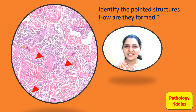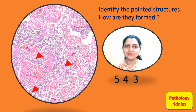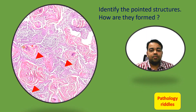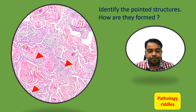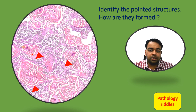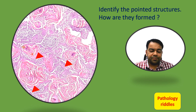The second question is: identify the pointed structures and also tell how those pointed structures are formed. The pointed structures here are called keratin pearls. These are diagnostic of well-differentiated squamous cell carcinomas. Now, how are these keratin pearls formed? The keratin pearl is formed by a tumor cell which starts dividing in all directions. Usually a normal cell will have some kind of polarity, so it will divide in a particular direction. But tumor cells lose all this polarity, so when they get space they will start dividing in all directions. So when it starts dividing from a point into all directions, what it forms is a sphere.